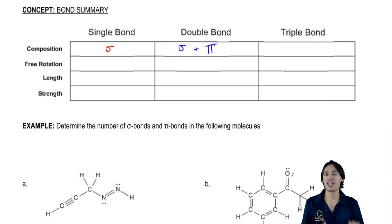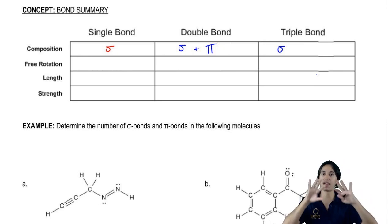The p orbitals have two regions of overlap, so that means that a double bond is made out of a pi and a sigma. Overall, that makes sense because a double bond has two orbitals that are overlapping. And then finally, a triple bond, you could guess, is going to have three orbitals overlapping.